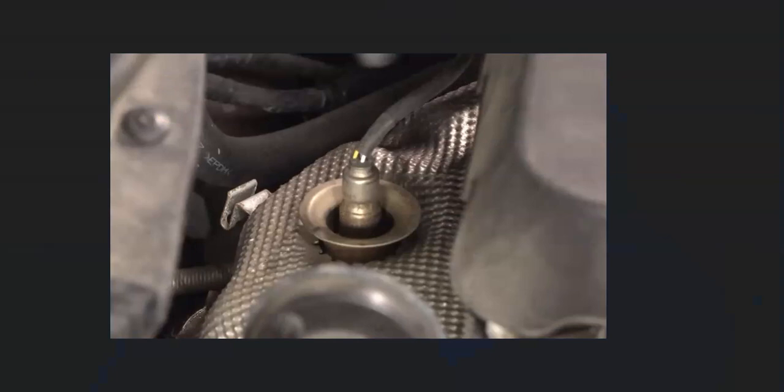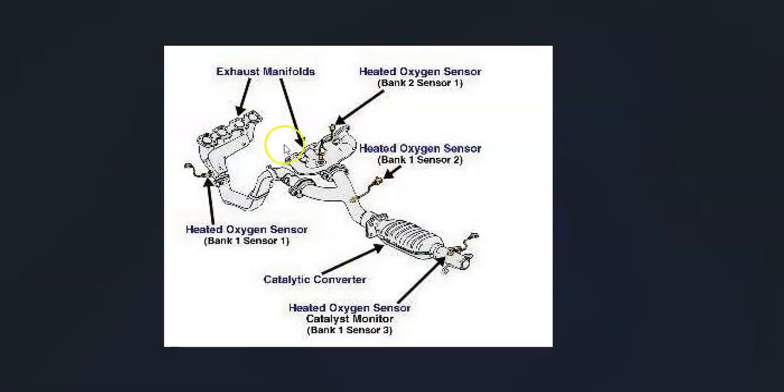This can be located differently. It's really going to depend on the year and the engine type that's in the Hyundai, so it's always a good idea to go get a diagram to find out for sure what's going on with your particular vehicle. For example, here's a 2003 Santa Fe and bank one sensor one's right here.